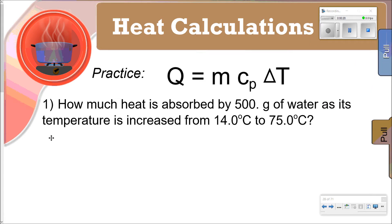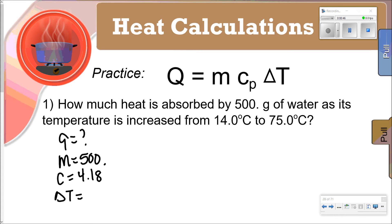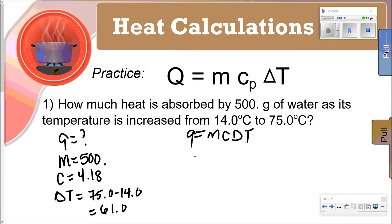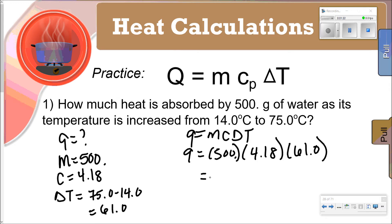Our Q value is unknown. Mass is 500 grams, C is 4.18, and ΔT is T-final minus T-initial: 75.0 minus 14.0, which gives 61.0. Remember, since this is addition and subtraction, significant figures rules apply to that piece before plugging into the overall equation. Plugging in: Q = 500 × 4.18 × 61.0. Calculating gives 127,490, but applying significant figures rules — three significant figures — that rounds to 127,000.